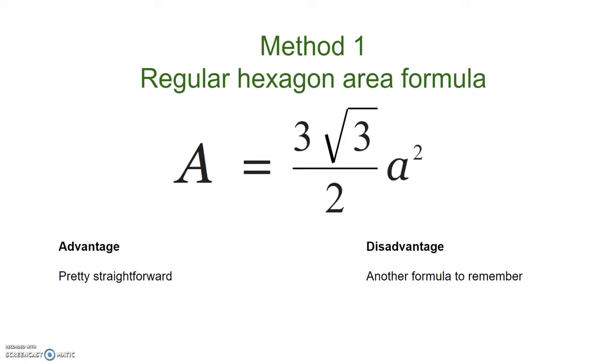So, let's start with the first one, which is the regular hexagon area formula, which is this one here. So, if you are good at memorising things, if you can just memorise that, then this is the easiest one to do.